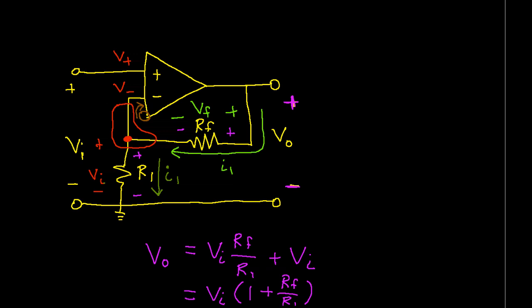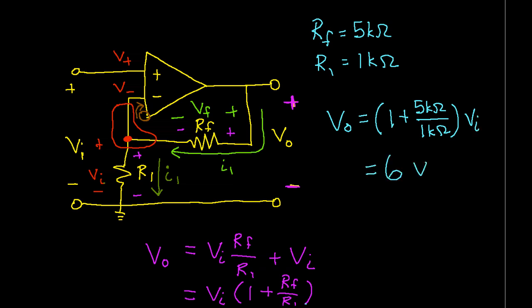So for example, suppose that we have the following component values. Let's suppose that RF is 5k ohms, R1 is 1k ohm. Then we plug the values for RF and R1 into our formula for the gain, and we get that Vout is 1 plus 5k ohms over 1k ohm. That's 5,000 divided by 1,000, which is 5. So the gain of the op-amp circuit is going to be 1 plus 5, which is 6.